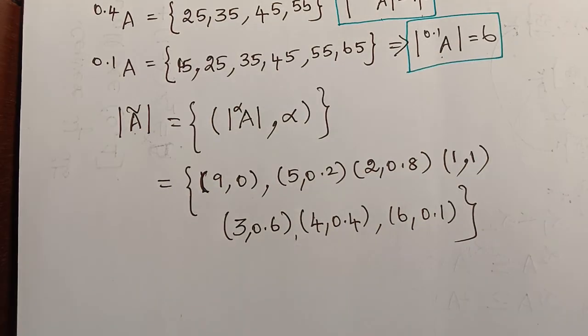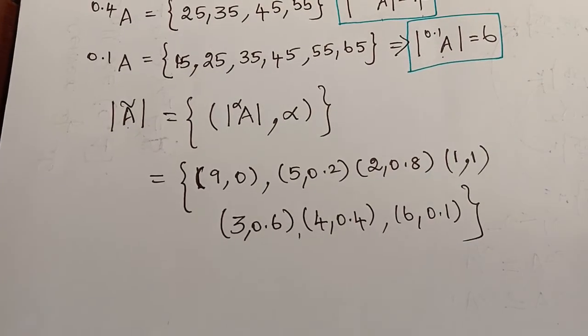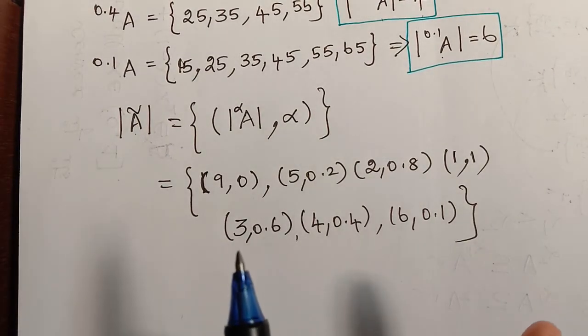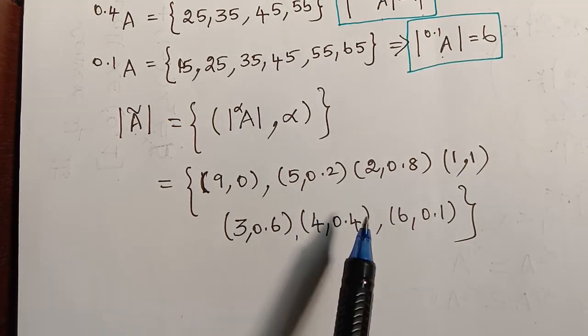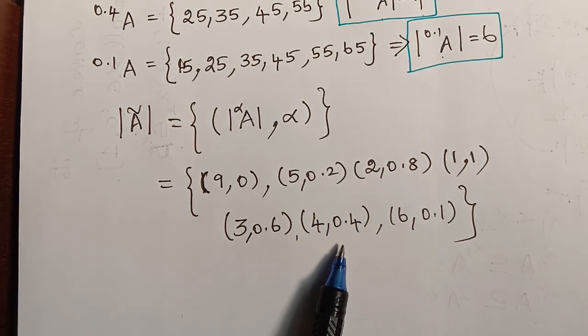I hope you have understood all three types of cardinality we learned today: scalar cardinality, relative cardinality, and fuzzy cardinality. Thank you.